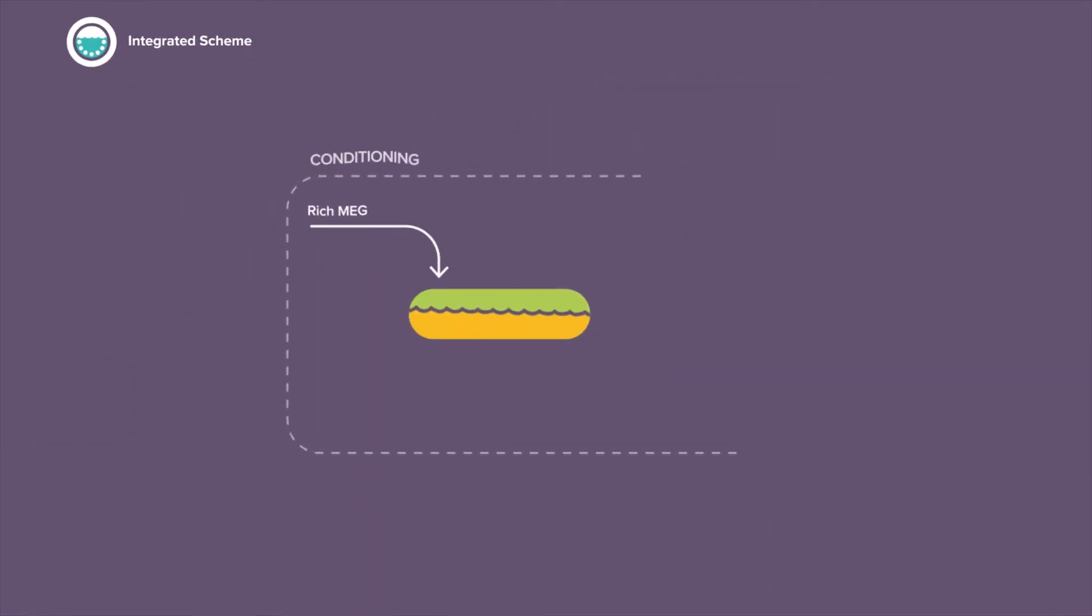In the first section, called conditioning, the rich MEG feed is preheated. Then, entrained gases or hydrocarbons are removed in a triphasic drum.